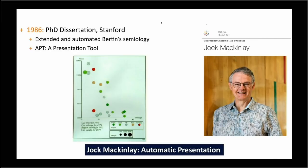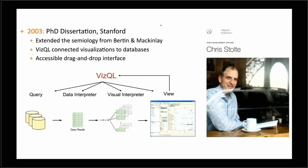Fast forward to 1986: this is Jacques McKinley, who is Vice President of Research and Experience at Tableau. He actually coined the term "information visualization," and part of his PhD dissertation at Stanford was how to do automatic representation of data. He extended Bertin's work into an automatic presentation. Then fast forward to 2003: Chris Stolte took Bertin's work and McKinley's work and came up with a language called Visual Query Language — VizQL.